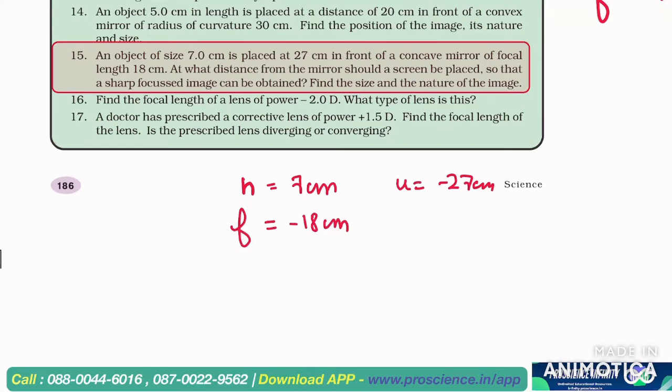Now the image will be placed, so we will use simply mirror formula: 1 by v plus 1 by u is equal to 1 by f. That is 1 by v is equal to 1 by f or minus of minus 27 cm.